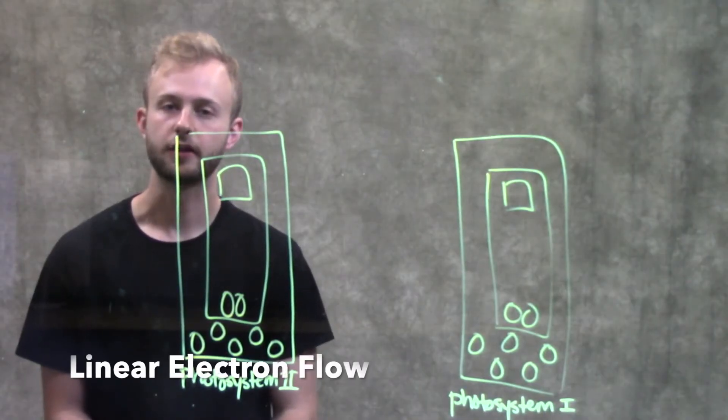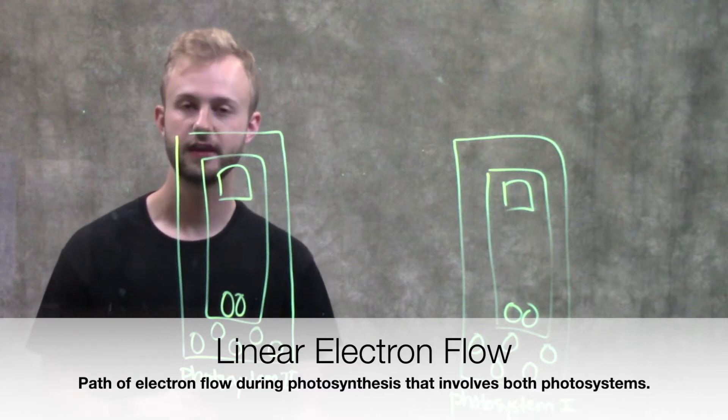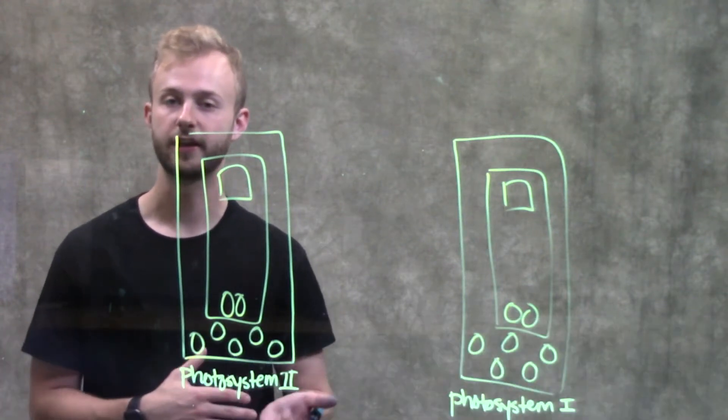This video is about linear electron flow, which is the path that electrons take through photosystem molecules to eventually end up in the Calvin cycle.